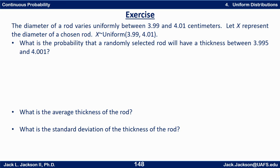The diameter of a rod varies uniformly between 3.99 and 4.01 centimeters. Let X represent the diameter of a chosen rod. So X is uniform from 3.99 to 4.01. What's the probability that a randomly selected rod will have a thickness between 3.995 and 4.001? Then what's the average thickness of the rod and the standard deviation of the thickness? Work this out and come back. Press pause now.